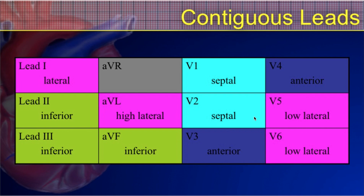Here's your typical 12-lead ECG format where you have lead 1 in the top left corner, and then underneath that leads 2 and 3, and then next to that you have AVR, AVL, and AVF. These are called the augmented leads, and then these are your limb leads. And then you have your precordial leads or your V leads, V1 through V6. Those are all of your leads on a traditional 12-lead ECG.